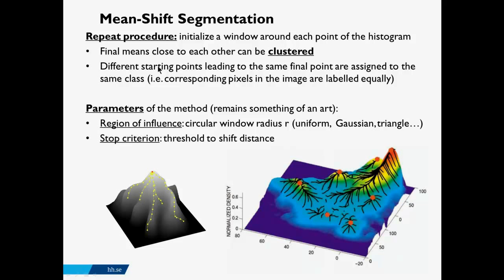Different starting points that lead to the same final peak are assigned to the same class. In this image, there are seven different segmentation regions produced by the algorithm.